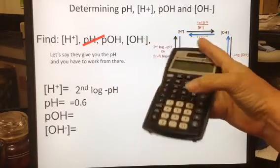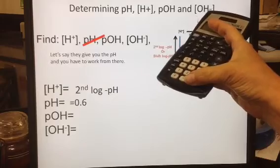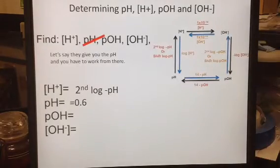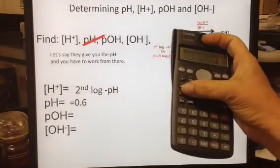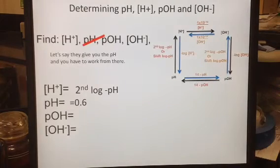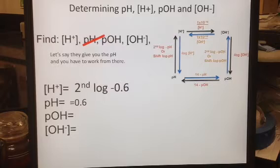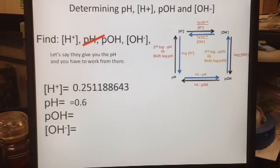Both of them are going to require you to find the negative button. This one is way down here at the bottom. And this one is over here. Negative and minus are not the same button. The next step is to put that in your calculator. So I've got the second log of negative 0.6. When I put that in my calculator, I get 0.25.